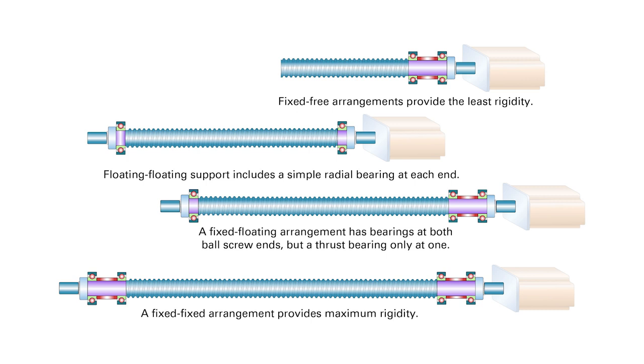Another method to improve rigidity is to use a larger diameter screw shaft. Increasing the screw shaft diameter increases its rigidity, and it also requires a larger diameter ball nut and larger end bearings, which will also contribute to better rigidity.